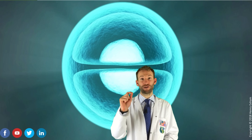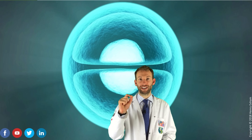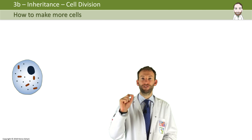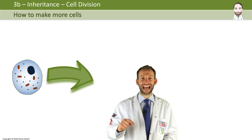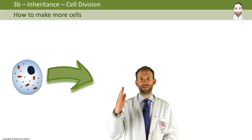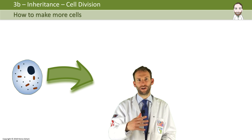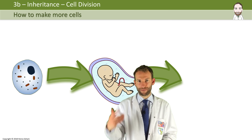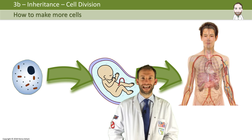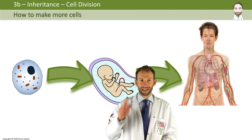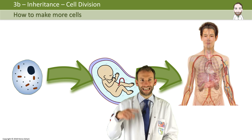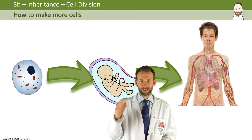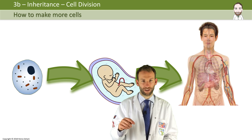We all started life as one single cell, a zygote formed from the fertilization of the sperm and the egg. But how did we go from one single cell to absolutely billions of cells? Well, that first single cell, the zygote, divided over and over again by a process called mitosis.